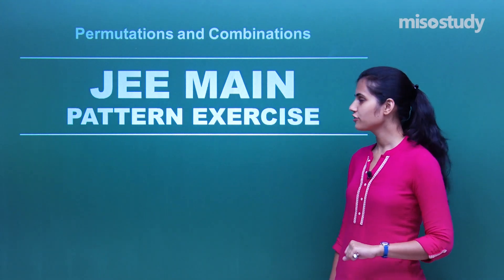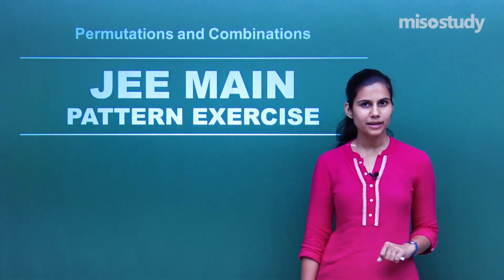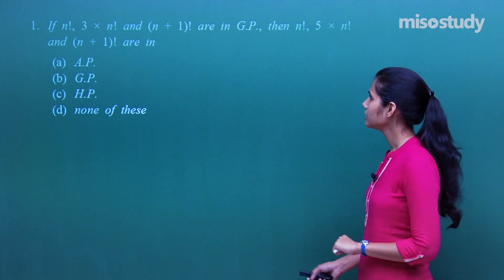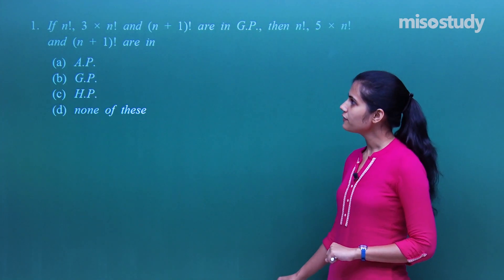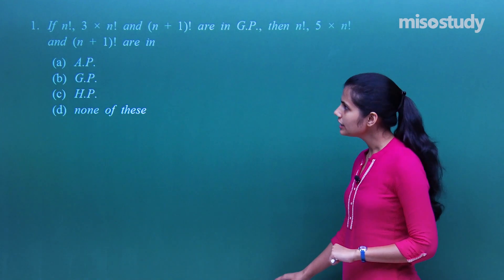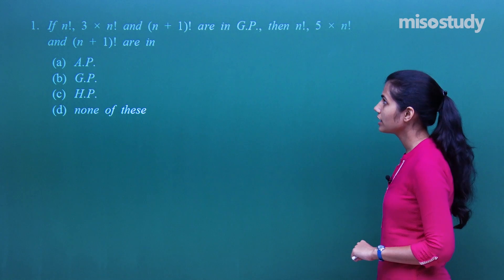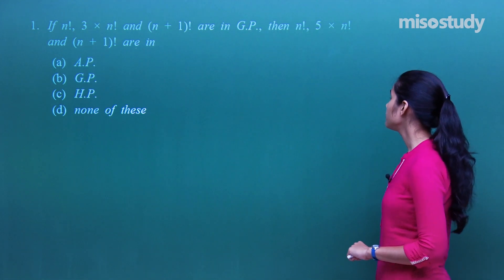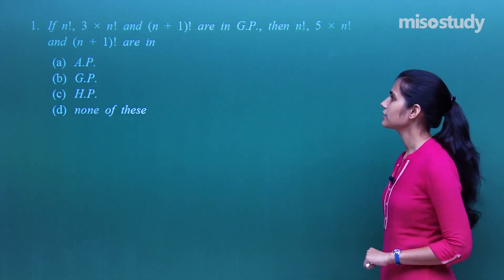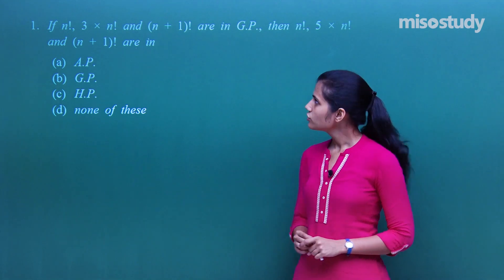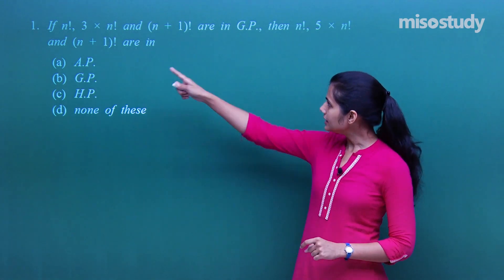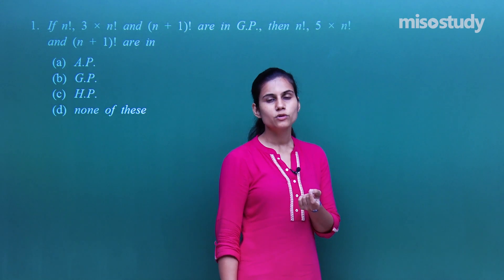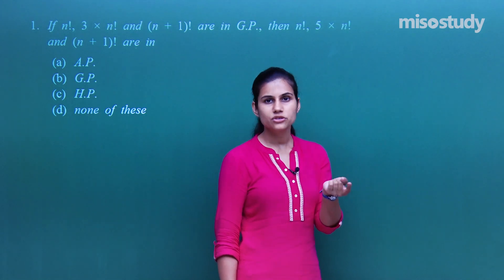Let's begin our discussion over the JEE Main pattern exercises for permutations and combinations. The first question says that if n!, 3·n! and (n+1)! are in GP, then what is the status of n!, 5·n! and (n+1)!. Since these three terms are in GP, the square of the middle term is equal to the product of the extremes.